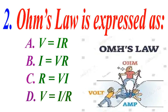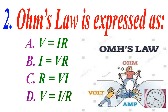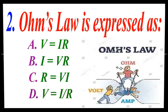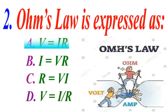Ohm's law expressed as: A V is equal to IR, B I is equal to VR, C R is equal to VI, D V is equal to I over R. The correct answer is A, V is equal to IR.